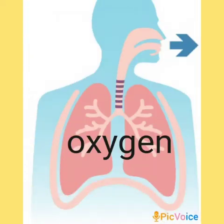Which gas is absorbed from the lungs into the bloodstream? It is oxygen, children. Oxygen is absorbed from the lungs into the bloodstream.